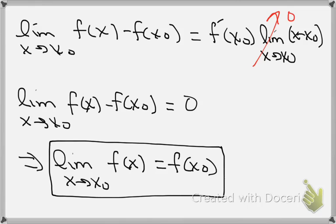We'll get exactly what we need by adding f of x naught to both sides, giving us the limit as x goes to x naught of f of x equals f of x naught. So it is true that if the function is differentiable at a point, then it must be continuous at that point. We've shown that.